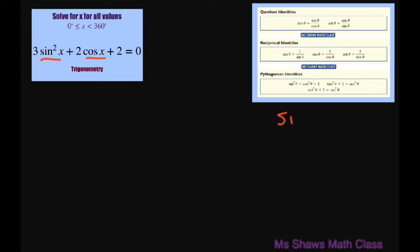So what I'm going to do is let sine squared of theta, using my Pythagorean identities here, equal 1 minus cosine squared of theta. So I can rewrite this as 3, and sine squared is going to be 1 minus cosine squared of x, then we have plus 2 cosine of x plus 2 equals 0.